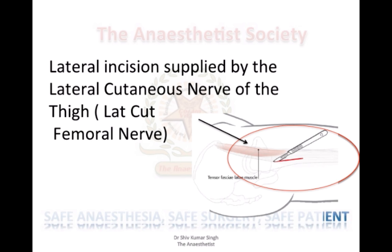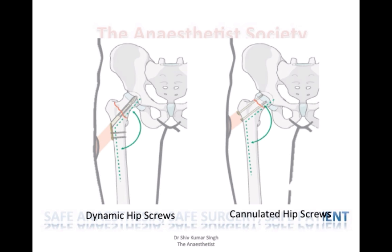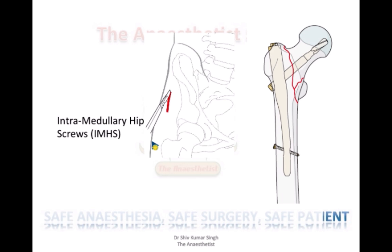The incision in this case is in the lateral approach. In the dynamic hip screw, we have a hip screw fixing the fracture and a plate on the lateral side of the femur. The cannulated hip screw has multiple screws fixing the fracture site, so there's no plate. The IMHS has a big nail going through the femur itself, and then there's a screw going through the nail fixing the fracture. The incision here is much higher up.